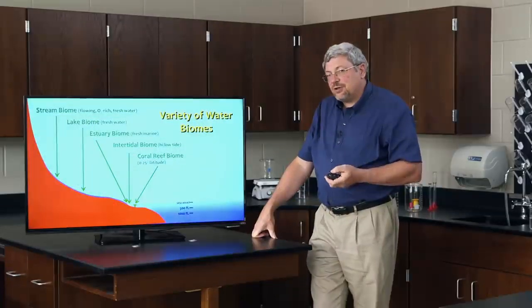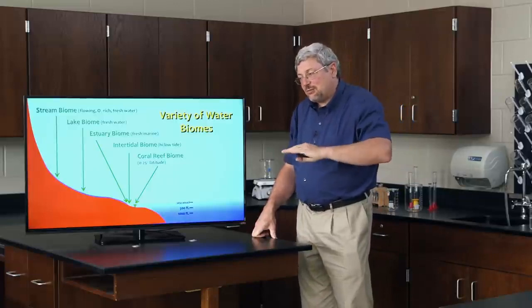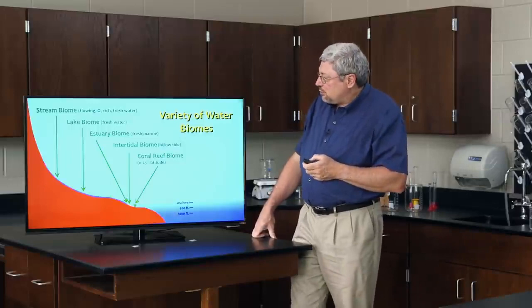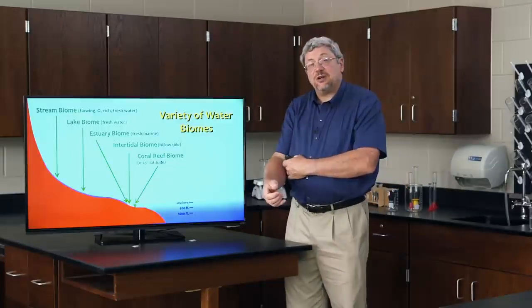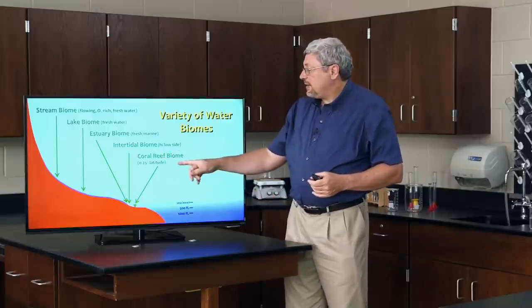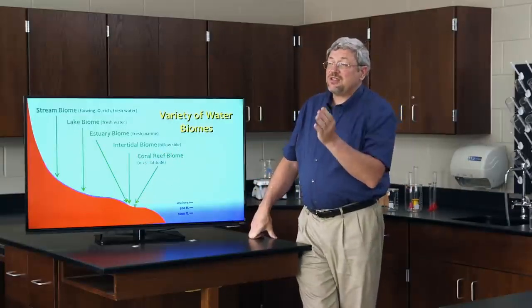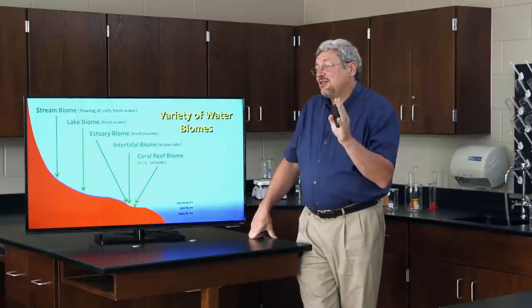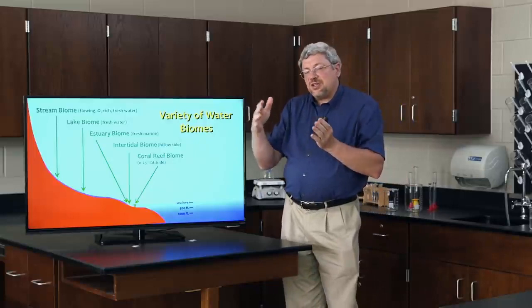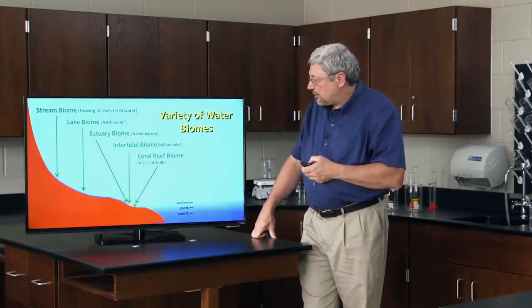Offshore, a little bit deeper from the intertidal zone and below low tide, everything I'm now going to talk about in the ocean is below low tide, we find in certain places of the Earth coral reefs and a coral reef biome. It's not in actually very many places of the Earth. It's got to stay within 25, 30 degrees maximum of the equator. Because the coral reef biome requires very warm temperatures and very warm water.